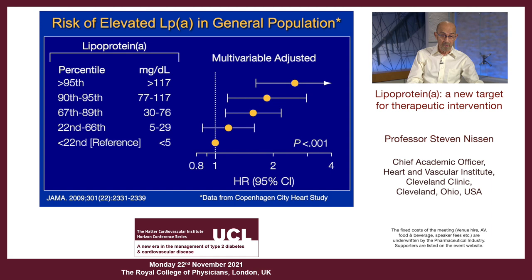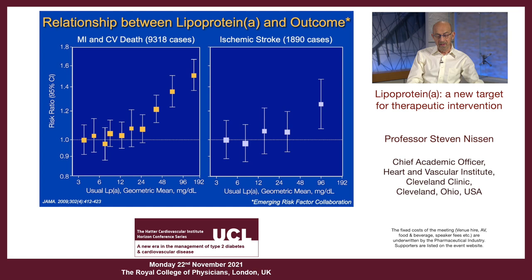What you really want is an LPA level of less than five, which is the referent group. The increase is not monotonic — it is curvilinear, exponential. As LPA rises, from 9,300 cases in the Emerging Risk Factor Collaboration, not much is going on until about 24, but when you get to 48 milligrams per deciliter, risk is going up. At higher levels in the range of 90 to 100, risk becomes quite high. I have patients whose levels are 400 milligrams per deciliter, and they are at extraordinary risk. The same thing is true for ischemic stroke — this exponential rise in risk as levels rise.